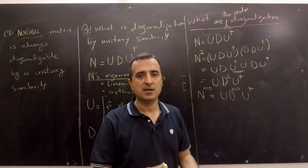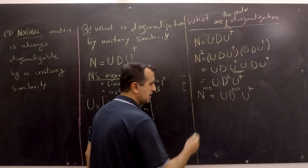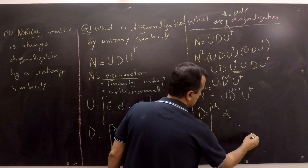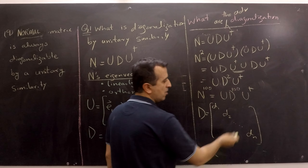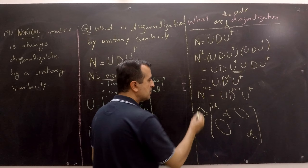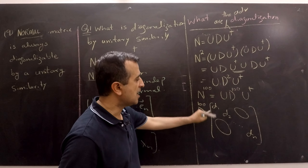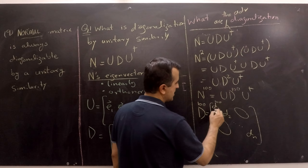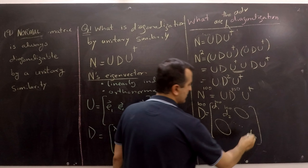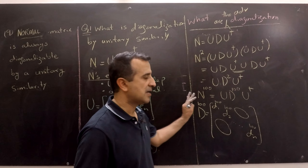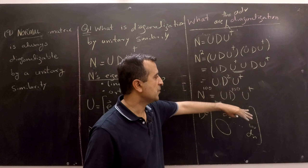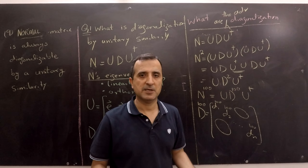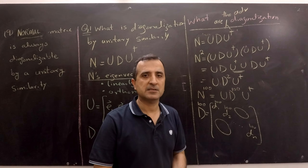To raise a diagonal matrix D to the power 100, you simply raise each individual diagonal entry to that power. If D has entries d1, d2, ..., dn with all off-diagonal entries zero, then D^100 has entries d1^100, d2^100, ..., dn^100 on the diagonal. This is far faster than multiplying the matrix by itself repeatedly or using scale-and-multiply algorithms.